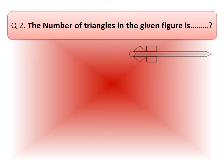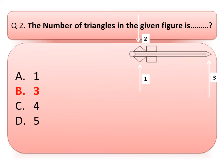So, let's count the triangles. Triangle number 1, triangle number 2, triangle number 3. So, the correct answer is B3. Option B, 3.